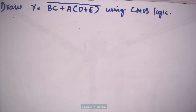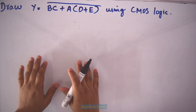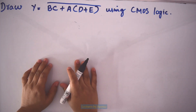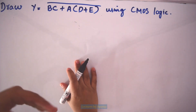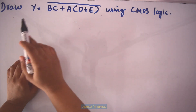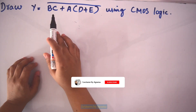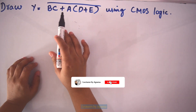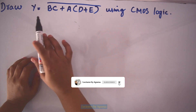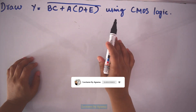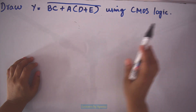Hello everyone, welcome to lectures by Aparna. Today we will discuss a question from the topic CMOS circuits. The question is: draw Y equals BC plus A into (D plus E), the whole bar, using CMOS logic.